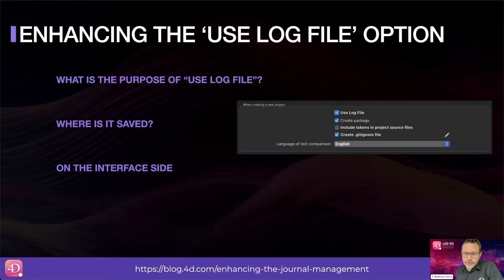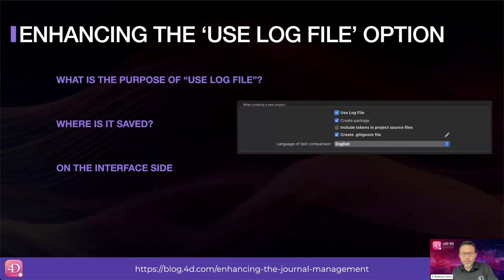Now we'll talk about the use log file option. In 4D v20 R3, log management is updated to provide more configuration options for development and deployment. You can now override the use log option like other backup parameters. This option determines if your application uses a log. When enabled, 4D prompts you to create or select a log when creating a new data file, storing the log path in the data file. If you open a data file without a log and this option is enabled, it will ask you to create or select a log.